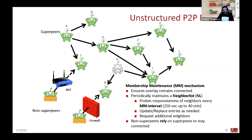The second class of bots is called non-superpeers. Non-superpeers are nodes behind a firewall or NAT device, meaning you have stateful firewalls. These nodes can contact the superpeers, but the superpeers cannot contact them back.